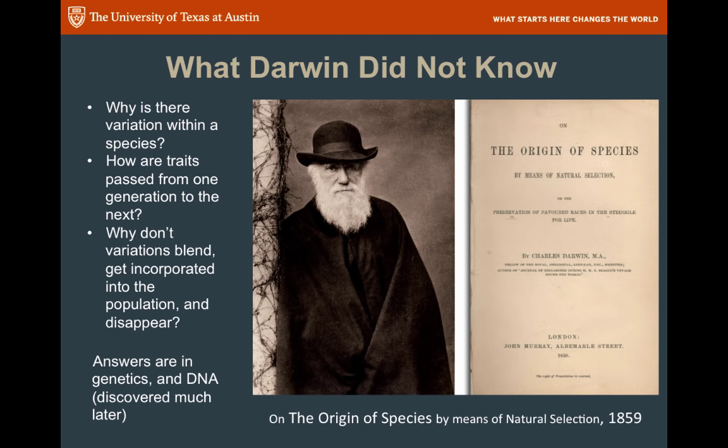Remember Gregor Mendel and his peas? Mendel's work was published in 1866, seven years after Darwin. DNA was discovered in 1869. Genes were discovered in 1944. The structure of DNA was figured out in 1953. All of these discoveries came along later and helped prove Darwin's theory. At the time they were unknown, but his book still made a strong impression.